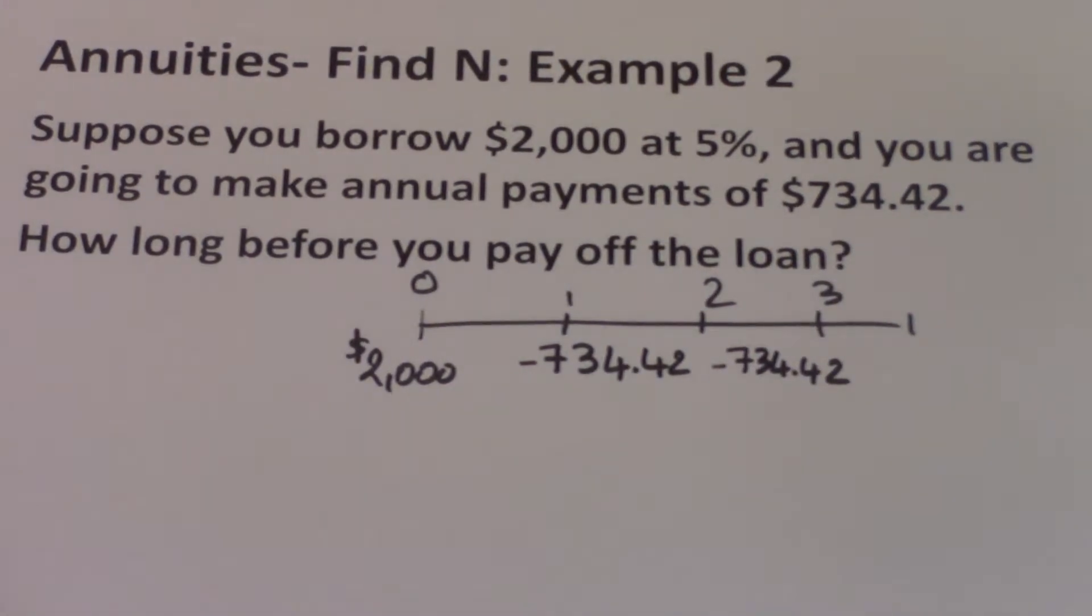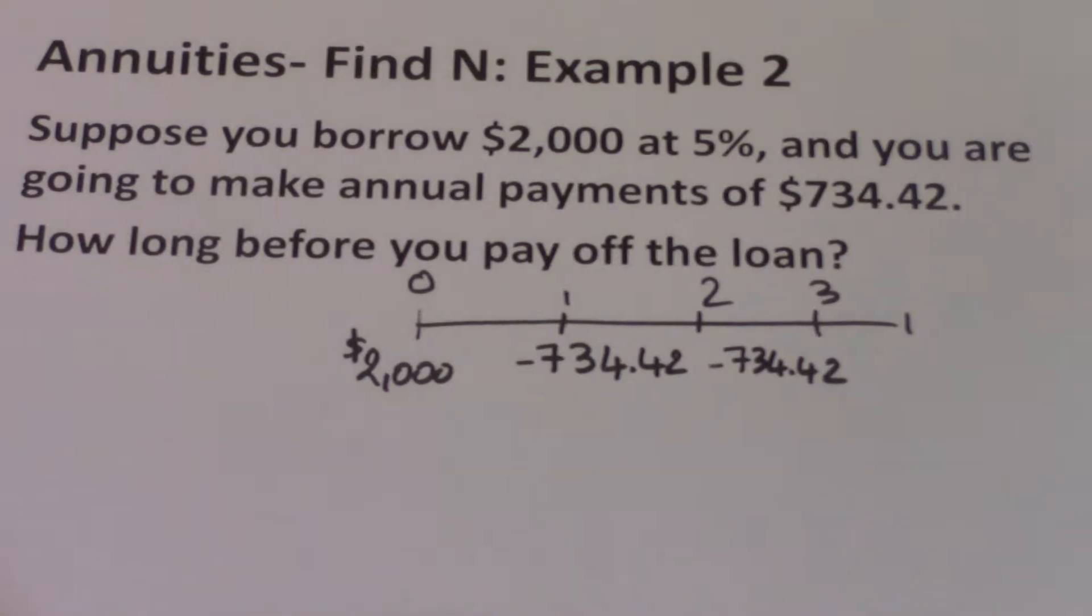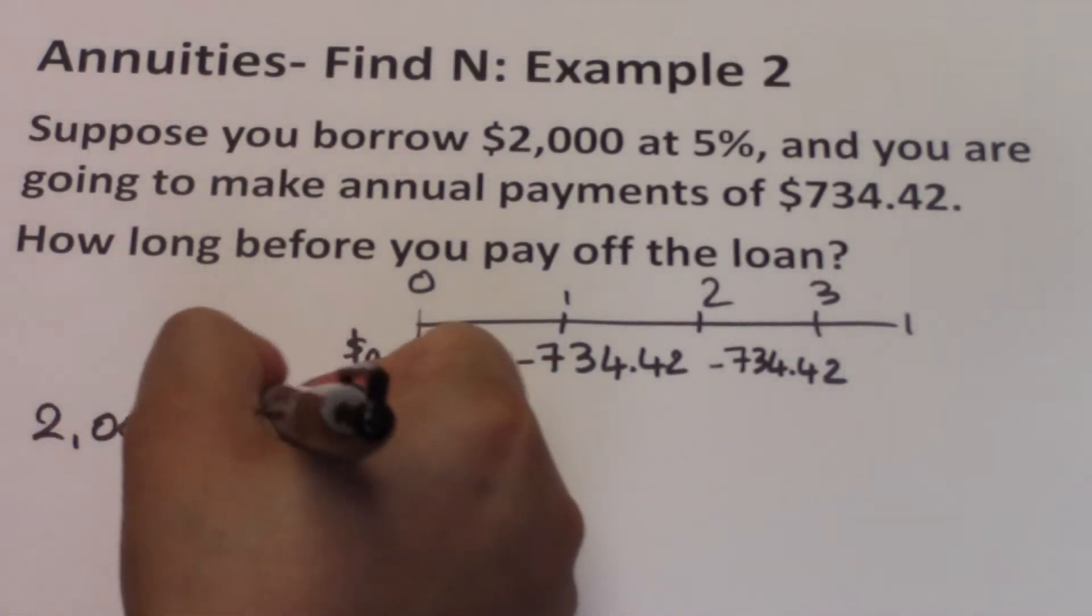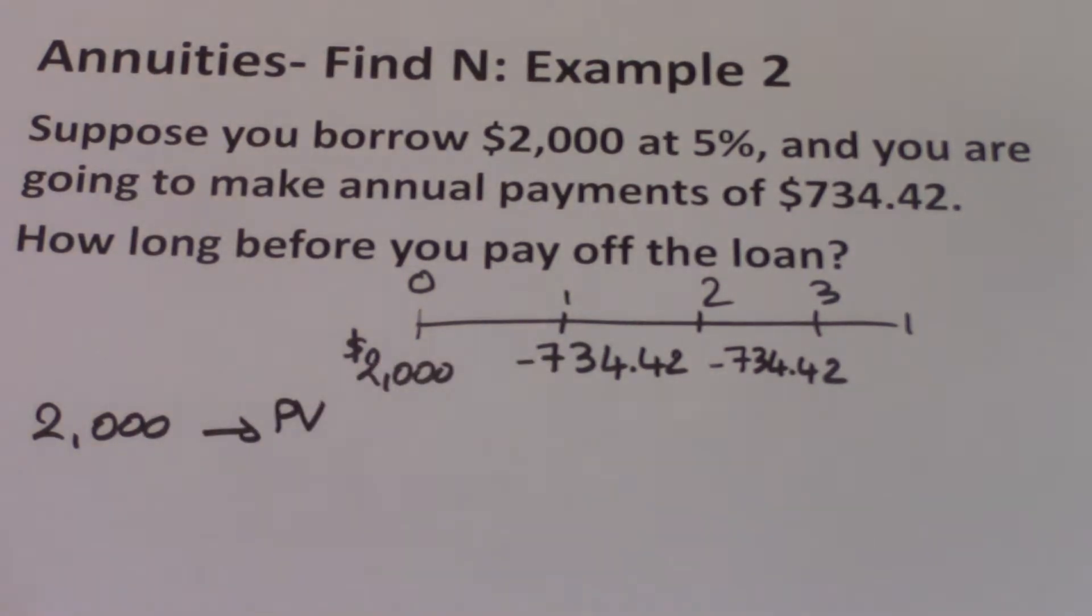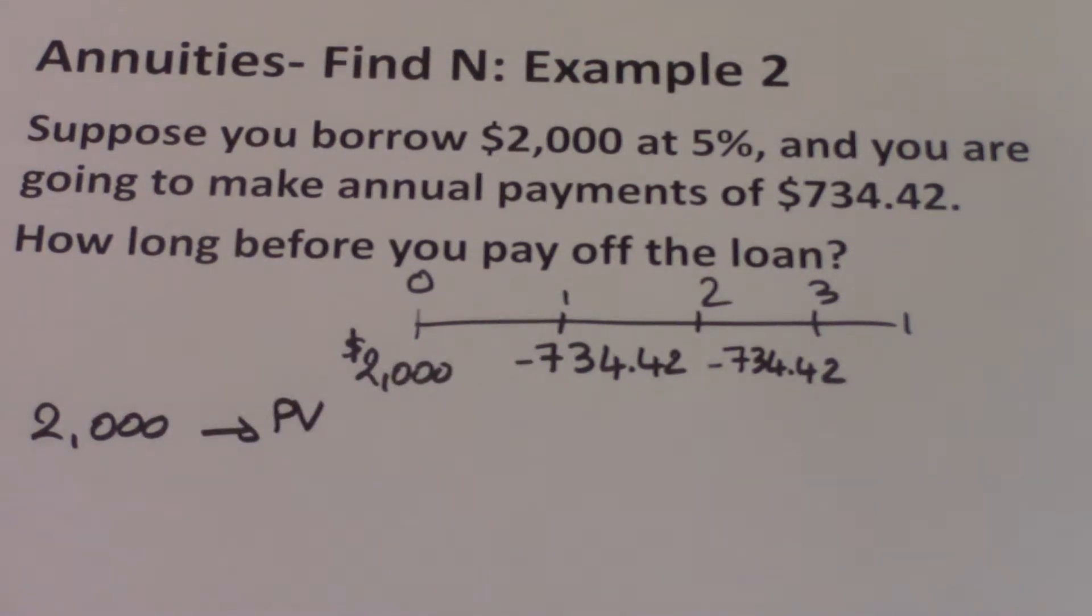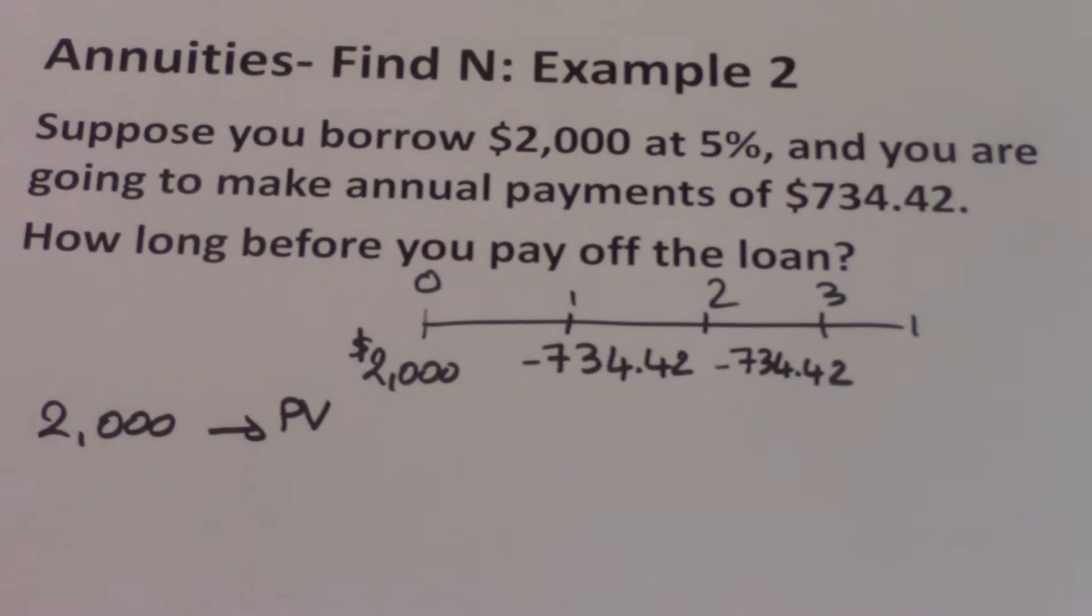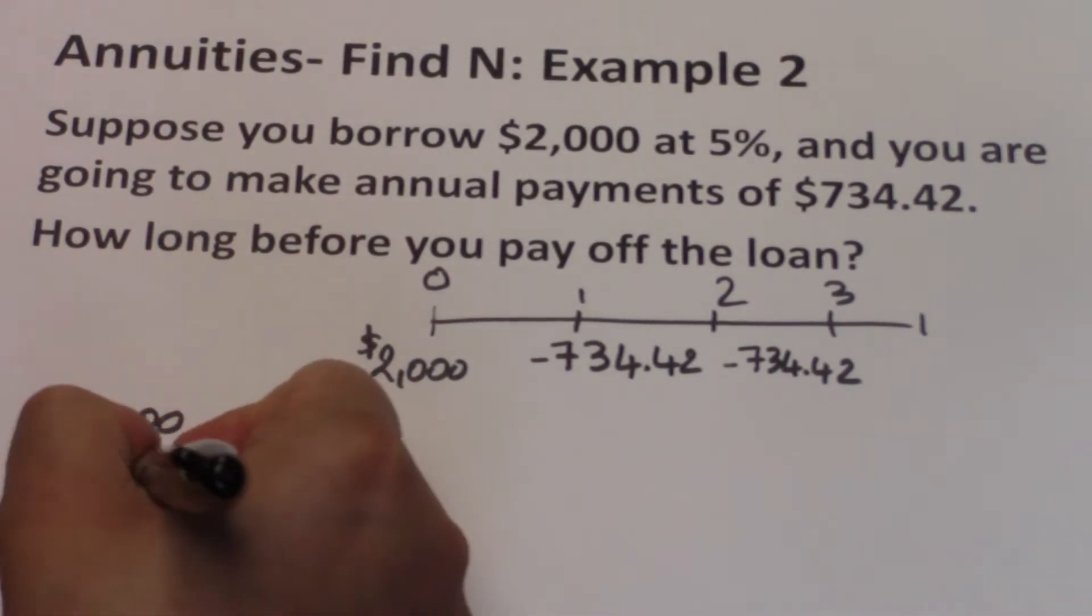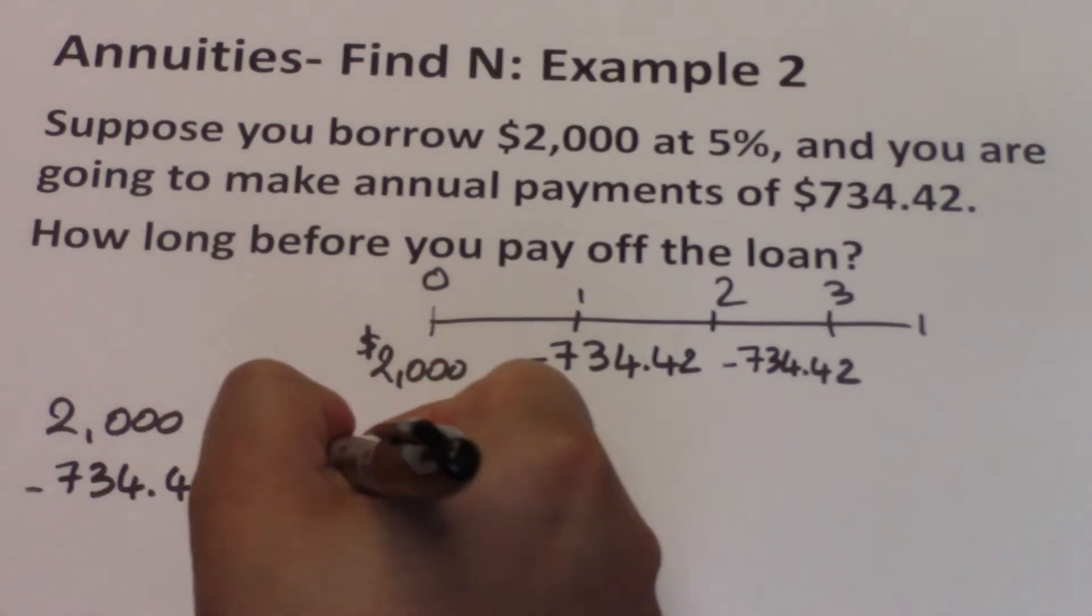So the $2,000 happens earlier on the timeline, so that is your present value. $2,000 is your PV. That $734.42 is a cash outflow to you and it will be your payment, inputted as a negative number. So negative $734.42 is your PMT.